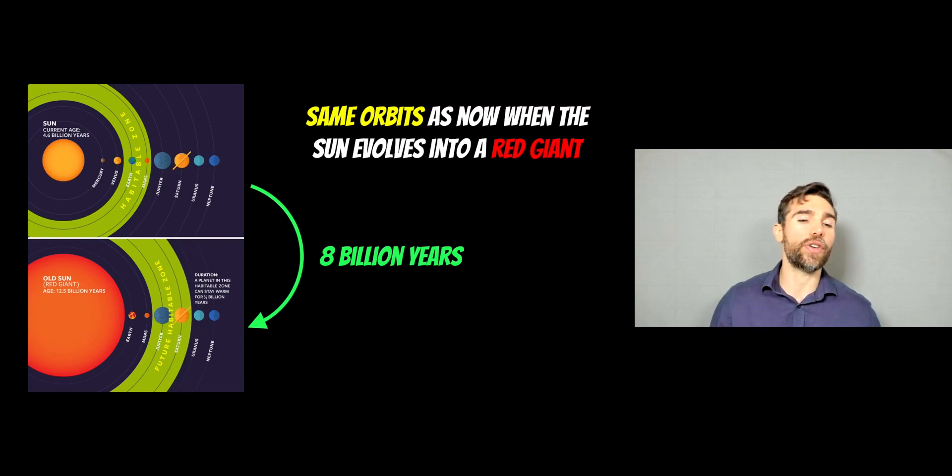There are a few very rare cases where some unusual dynamics might occur where there could be some changes. But generally speaking, we're expecting all the planets to be on the same orbits as they are now in 8 billion years' time, which is a long time, so nothing really to worry about there.